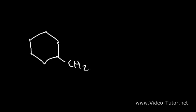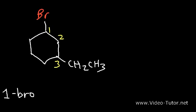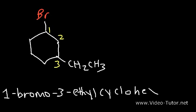Go ahead and name this cycloalkane. We have a bromo group on carbon one and an ethyl group on carbon three. Because B comes before E alphabetically, we say 1-bromo-3-ethyl rather than 1-ethyl-3-bromo — we need to alphabetize it and, if possible, put the numbers in increasing order. The name is 1-bromo-3-ethylcyclohexane.